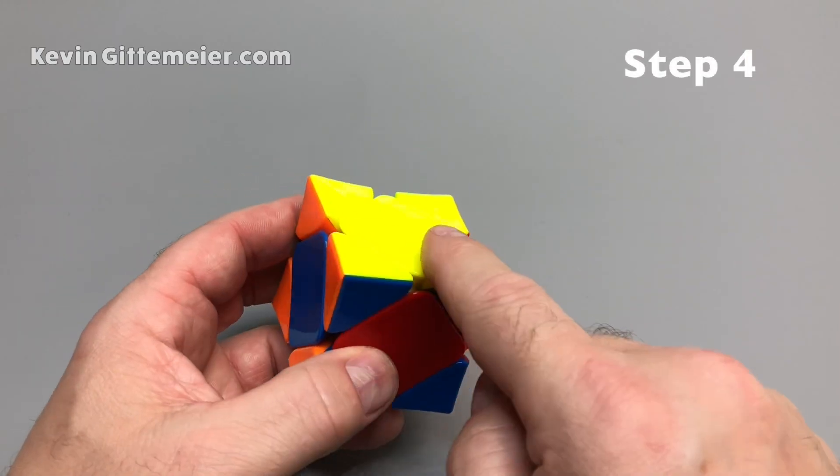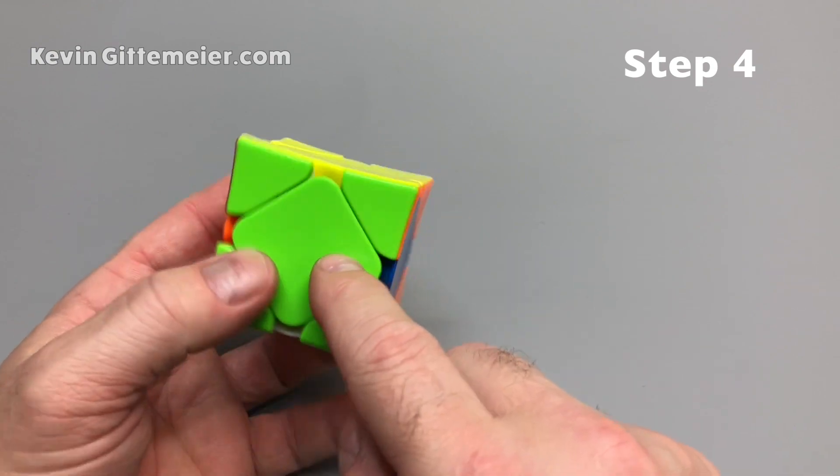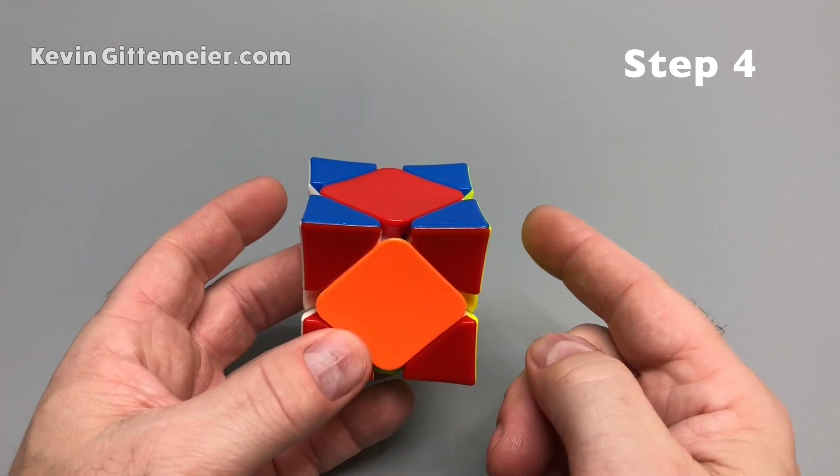So once we have the yellow on top and the yellow layer solved, what we do is we look at the sides and we're looking for one that's solved. So we found a solved one. We want to make that the bottom, putting the yellow and the white on the sides.